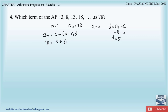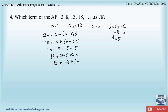Substituting the values: 78 = 3 + (n − 1) × 5. Simplifying: 78 = 3 + 5n − 5, which gives 78 = 5n − 2. Transferring −2 to the left-hand side: 78 + 2 = 5n, so 80 = 5n, therefore n = 80 ÷ 5.